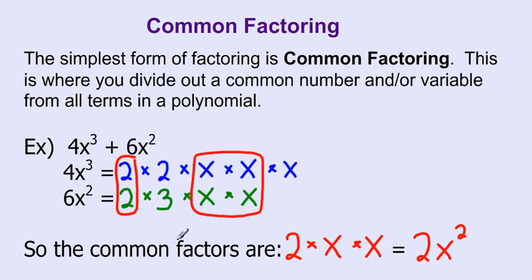2 times x times x is going to give us 2x squared. So if I was looking for the common factors in 4x cubed and 6x squared, the answer would be 2x squared, because 2x squared is in both of those.